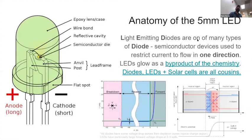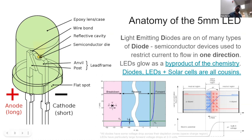When we're talking about LEDs, this is the iconic LED that everybody who did the board last week got their hands on — that's an image straight out of Wikipedia. It's an epoxy lens, and inside there's an anvil and a post. There's a flat spot and a ring. There's the cathode and the anode — the short and the long leg.